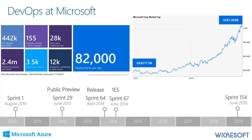From $217 billion on August 21st, 2009, to over a trillion dollars in value right now. You can see that as of Sprint 154 in June 2019, they had 82,000 deployments per day. This is all public information, and there's a lot of great background from Microsoft on how they actually accomplished this.